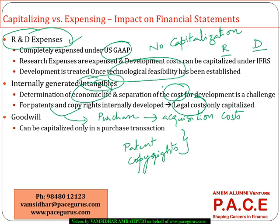When you talk of goodwill, internally generated goodwill cannot be recognized at all. Goodwill acquired through a purchase or acquisition transaction can be recognized, but you need not amortize or depreciate it because there is nothing called a useful life associated with goodwill. There could be an impairment of the asset, but there is no depreciation associated with goodwill.